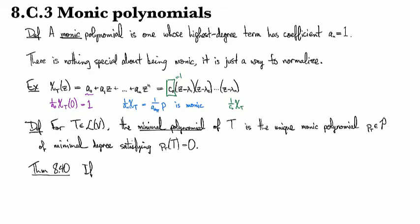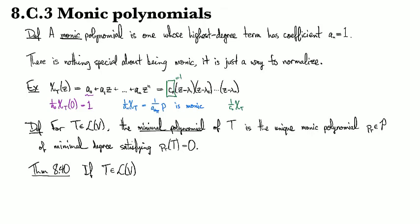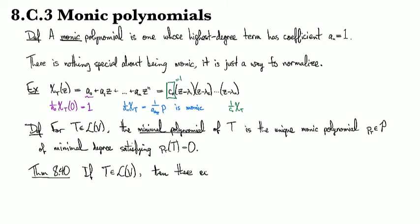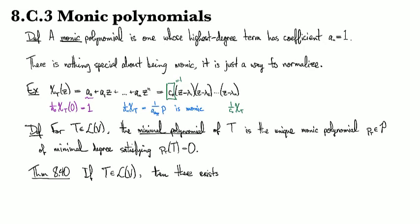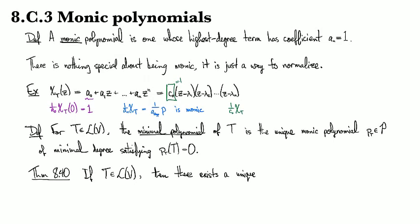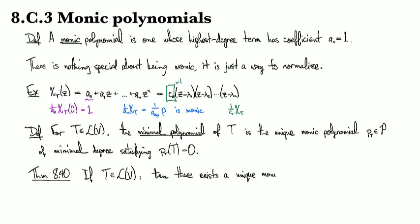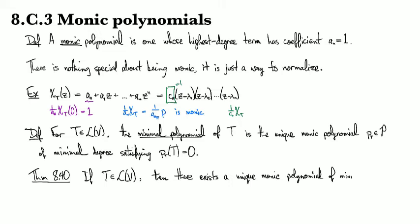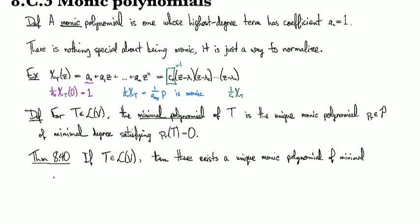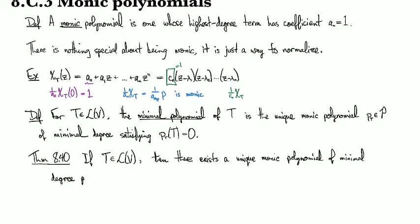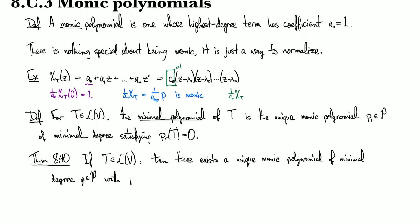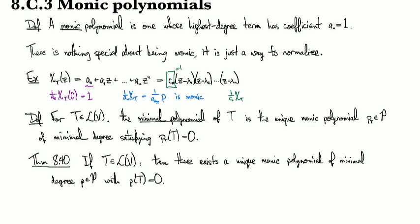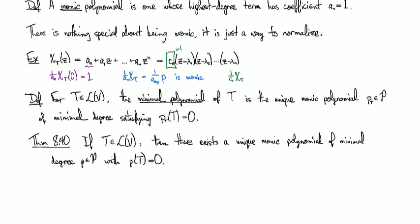And so the theorem says that if we have an operator T, then there exists a unique monic polynomial of minimal degree for which P of T is the 0 operator. Okay. So that's just saying that the definition is well-defined.